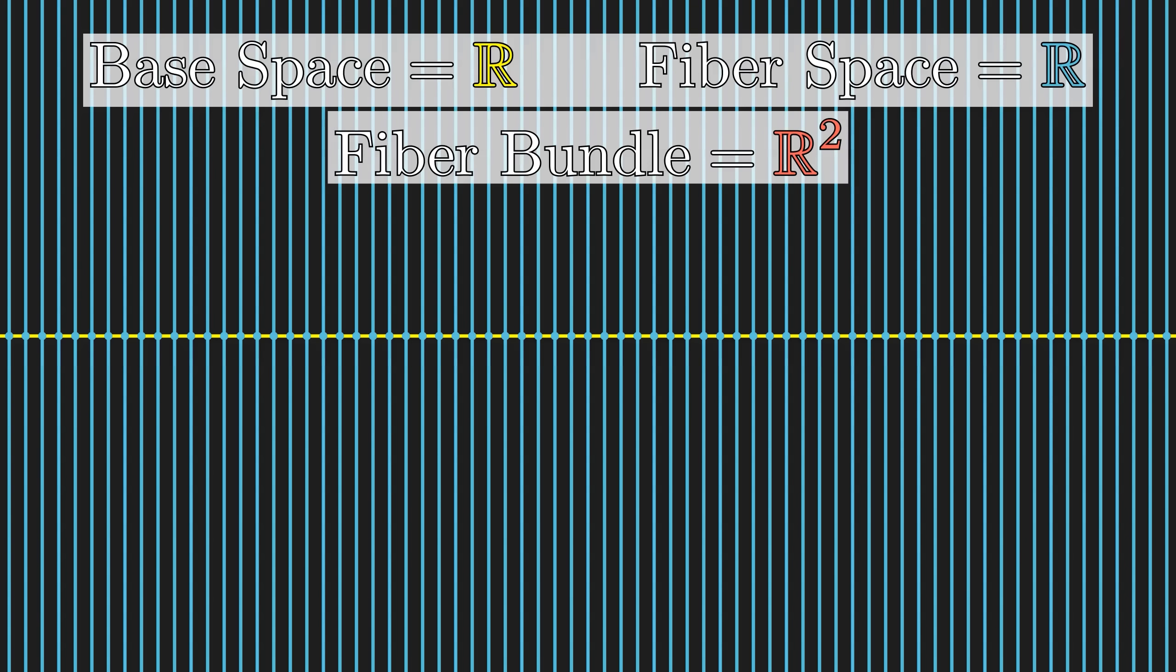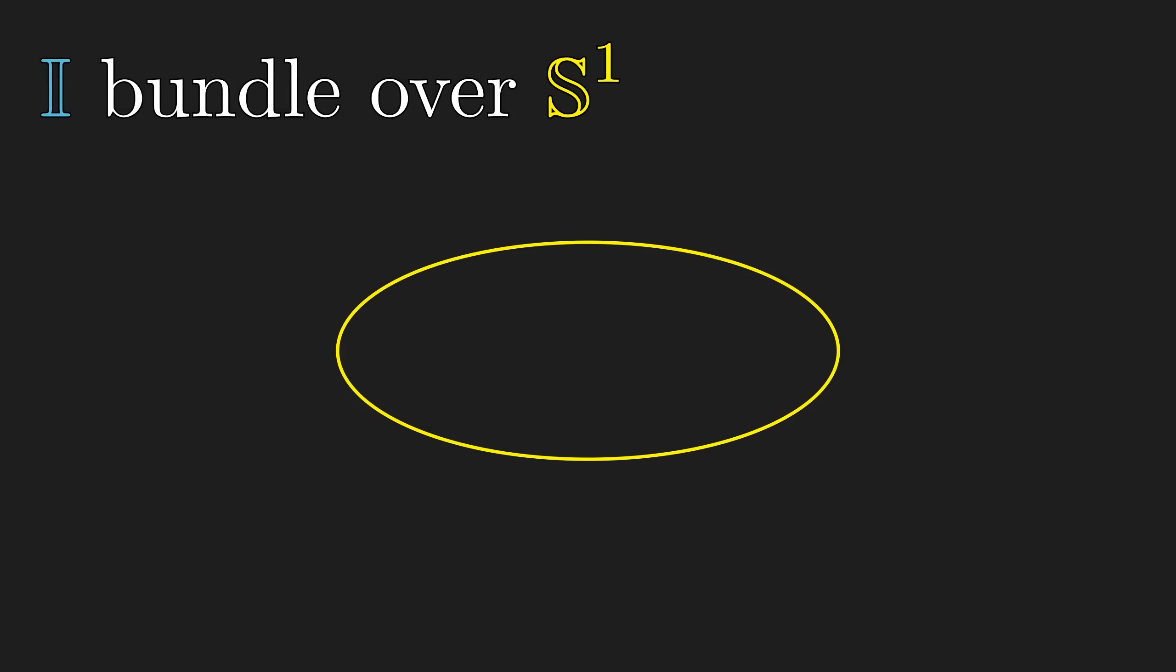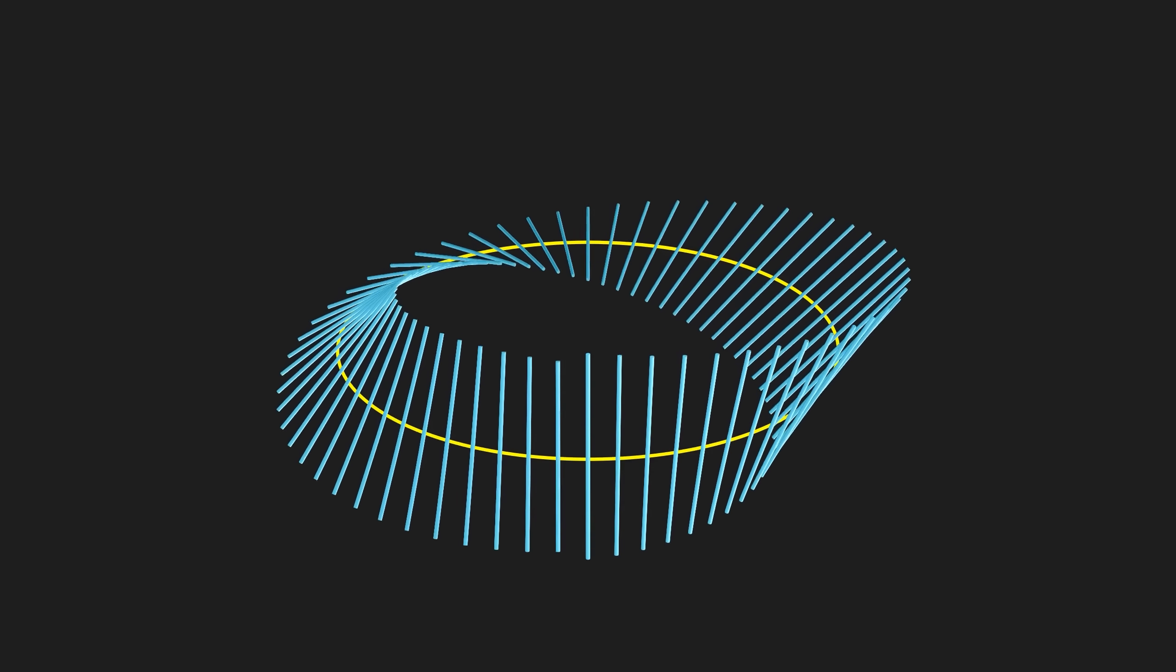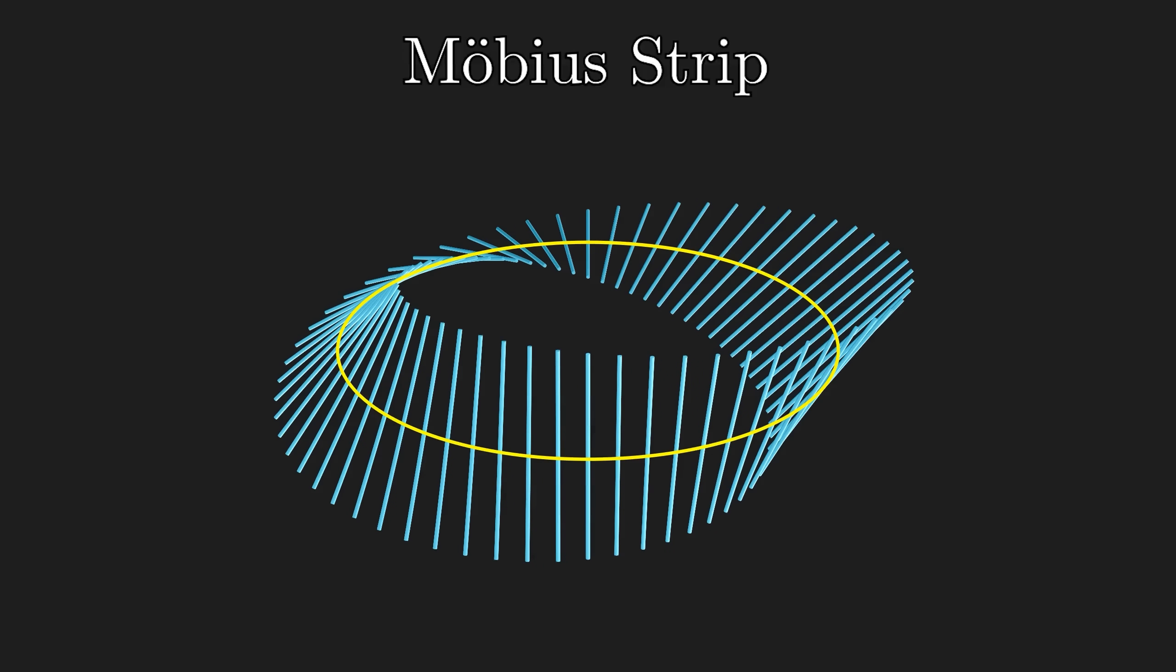Now, let's take a look at a more interesting example. An interval bundle over a circle. If the resulting space is the same as the Cartesian product, we call it a trivial bundle. But unlike the previous example, there is also a non-trivial bundle, which we can get by adding a twist, and the resulting space is called the Möbius strip.